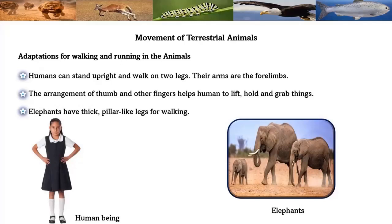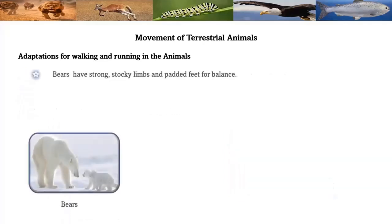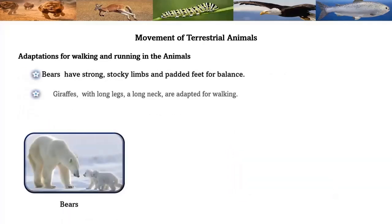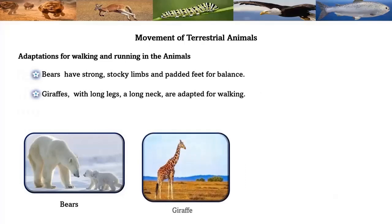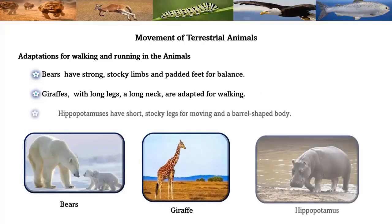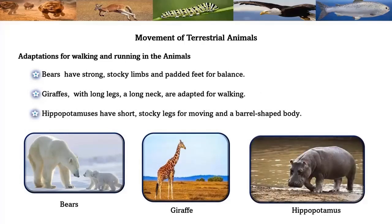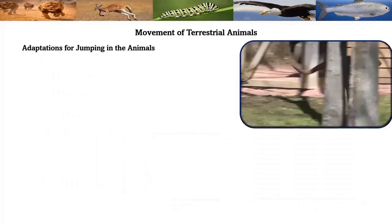In humans, the arms are the forelimbs, and the arrangement of the thumb and other fingers helps them lift, hold, and grab things. Elephants have thick pillar-like legs for walking. Bears have strong stocky limbs and padded feet for balance. Giraffes with long legs are adapted for walking. Hippopotamuses have short stocky legs for moving and a barrel-shaped body.